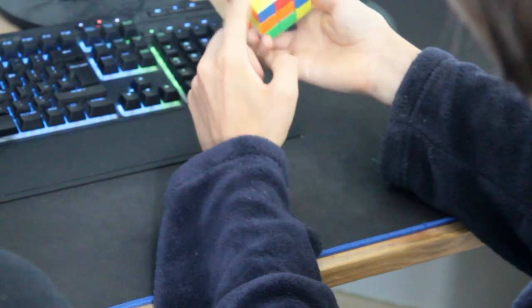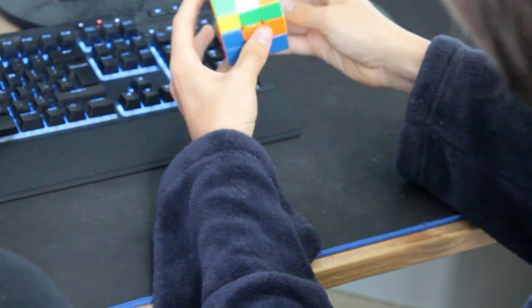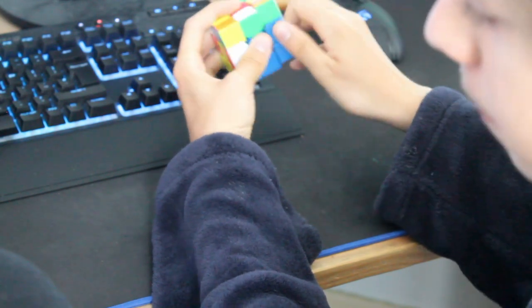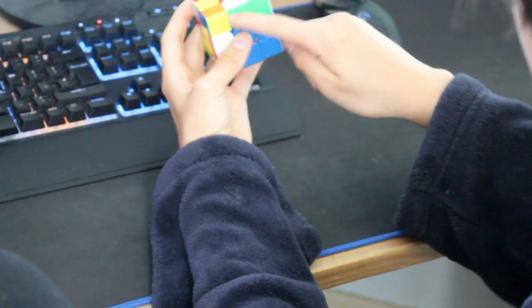Before I do that, I put this edge down as well, so I do U prime and a D2. That sets that up and then I put this edge in. What I could have done is actually done a double x-cross here where I solve this edge as well by doing that, but I didn't see that obviously because it's quite hard to see.